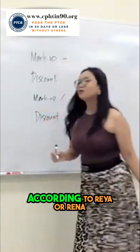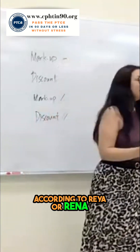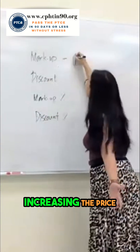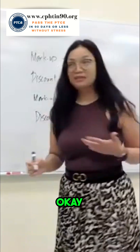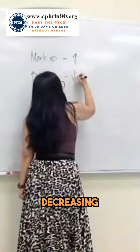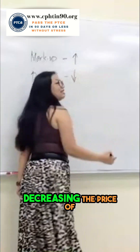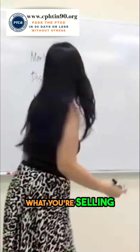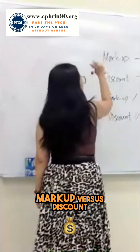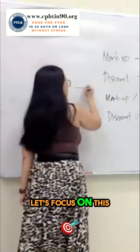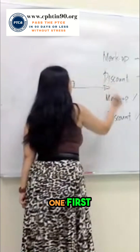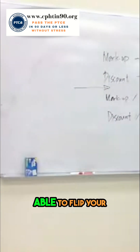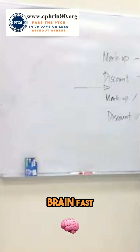Markup is increasing the price. Discount is decreasing the price of the goods, the products you're selling. Markup versus discount — let's focus on markup first. If it's markup, you have to be able to flip your brain fast.